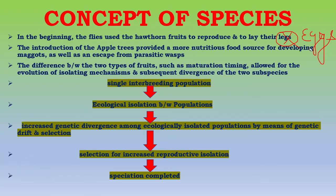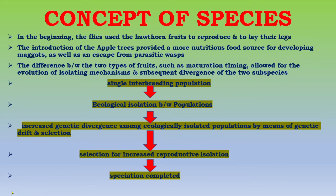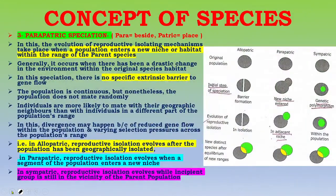In the diagram for sympatric speciation, a single interbreeding population undergoes ecological isolation between populations, resulting in increased genetic divergence among ecologically isolated populations by means of genetic drift and selection. This is followed by selection for increased reproductive isolation and finally speciation is completed.